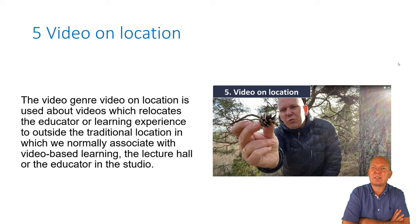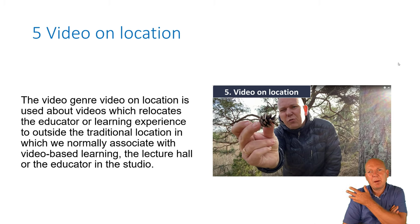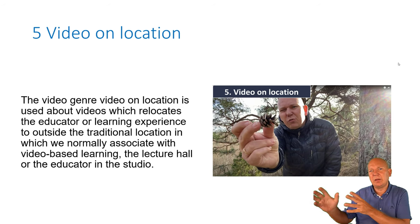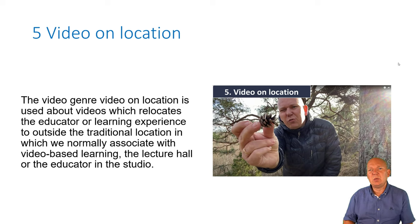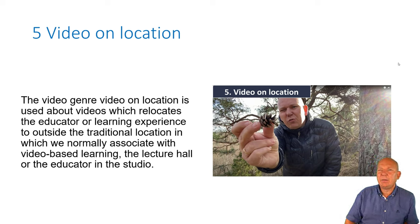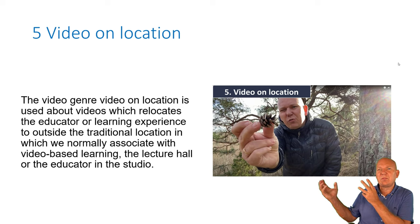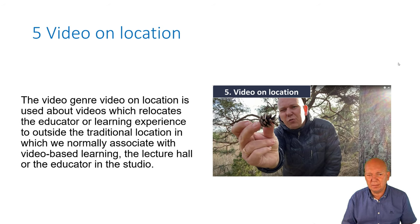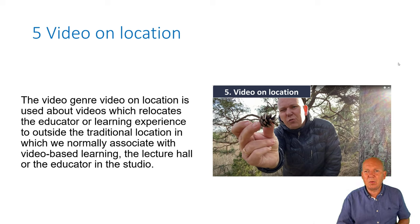The fifth genre is videos on location. In this genre, what happens in the background is important — it is either the main communication or a secondary communication providing live context from reality around you. This is different from a studio with a green screen. In video on location, what's happening in the background is important for the communication.